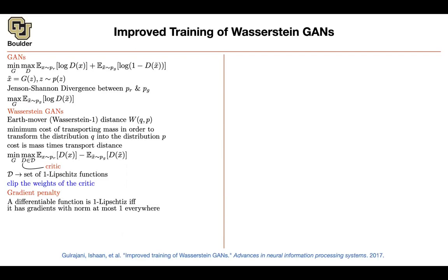There is a theorem in the paper — actually borrowed from another paper in the literature — which says: if you have a differentiable function, and neural networks are differentiable, it is going to be 1-Lipschitz if and only if its gradients have a norm that is at most one everywhere. So if a function is differentiable, you can know its gradients, and if those gradient norms are at most one, it is 1-Lipschitz. This is a two-sided equivalence that you can use.